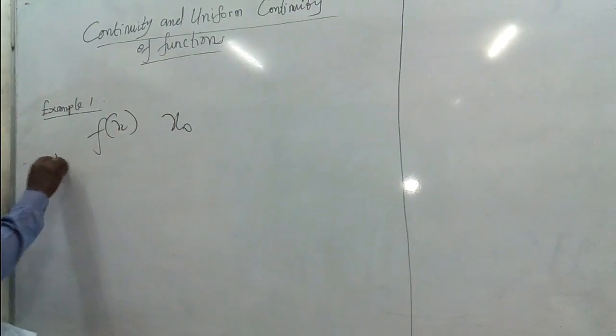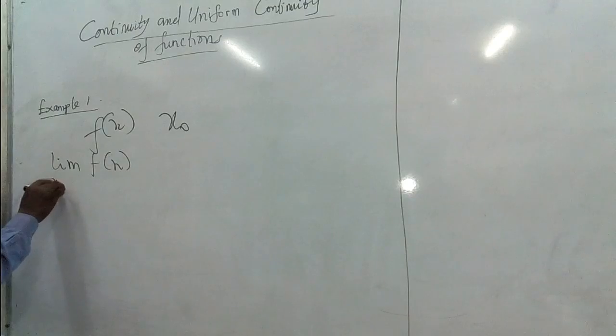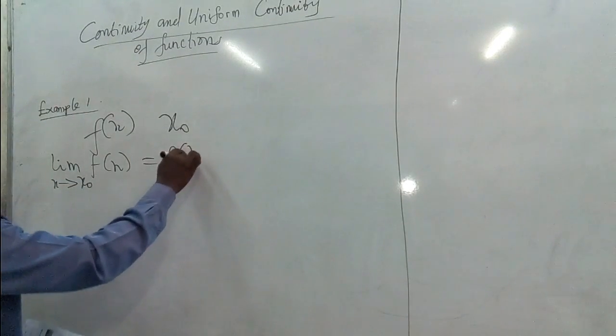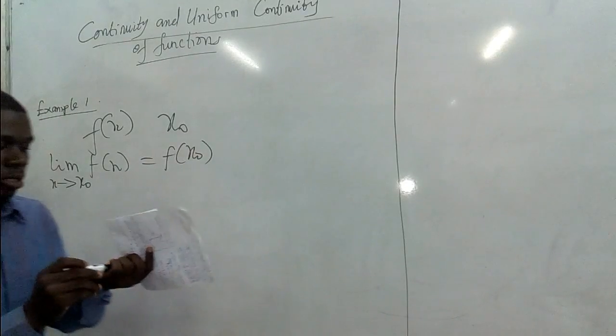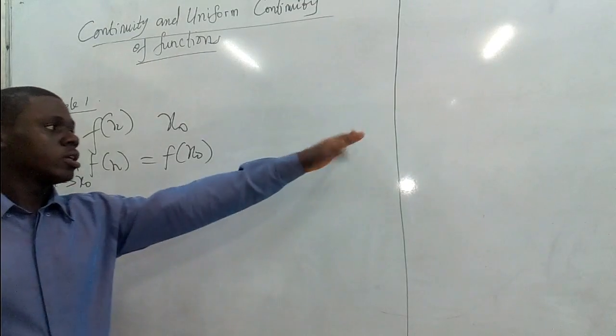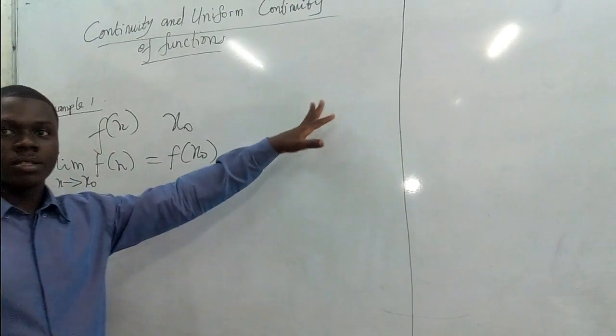We want to say something like this: the limit of f as x approaches x₀ is equal to the function value at that point. As you know, this one has got its own equivalent statement. So given any epsilon positive, there exists delta.